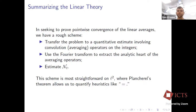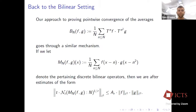We now have a scheme for proving pointwise convergence along linear averages: transfer the problem to a quantitative estimate involving convolution operators on the integers; use the Fourier transform to extract the analytic heart of these operators; and then estimate the jump-counting function. The advantage of working on L² is that Plancherel's theorem allows us to quantify all our heuristic approximations very accurately.